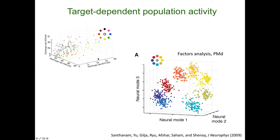But there is hope: instead of a blind three-dimensional reduction, we can do a smart three-dimensional reduction, as done by Shenoy and collaborators in 2009 using factor analysis — here on data from premotor cortex. You see something very interesting: all the points cluster according to the target being reached for, and moreover the neighborhood relationships between clusters mirror the neighborhood relationships between actual targets in real space. This tells me dimensionality reduction is not just a visualization tool — it's a powerful tool for information processing analysis.